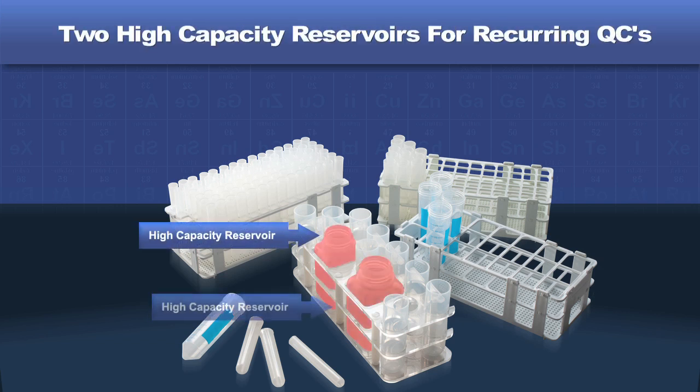The Hydra 2 AA offers two high-capacity reservoirs for recurring QCs, such as CCVs and CCBs, enough for a full auto sampler run without operator intervention.